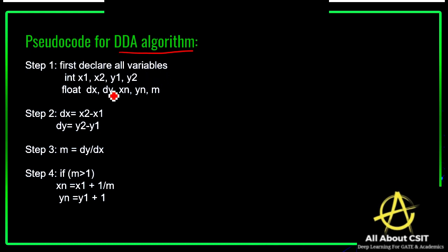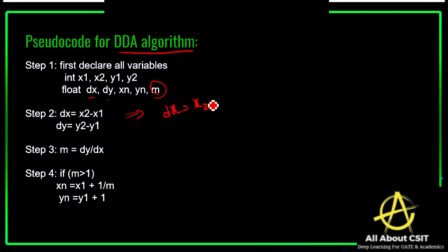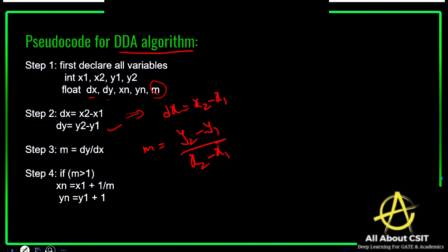Pseudocode of DDA algorithm — step 1: declare all variables: starting points x1, x2, y1, y2; float dx and dy to store the difference of x and y; xn and yn as the ending points; and m as the slope value. Step 2: find the difference dx = x2 − x1. The slope m = (y2 − y1) / (x2 − x1), which equals dy / dx.